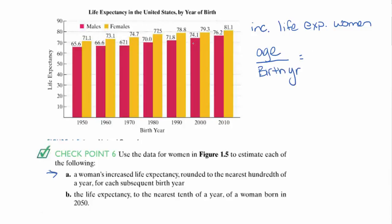We want to look at the life expectancy increase. From 1950, females were expected to live about 71.1 years, and by 2010 they're expected to live 81.1 years. So we need to find that difference, because we're looking for the change.